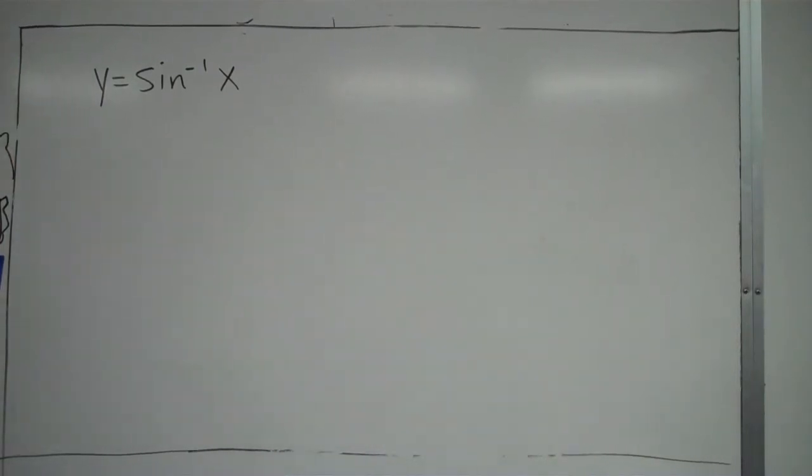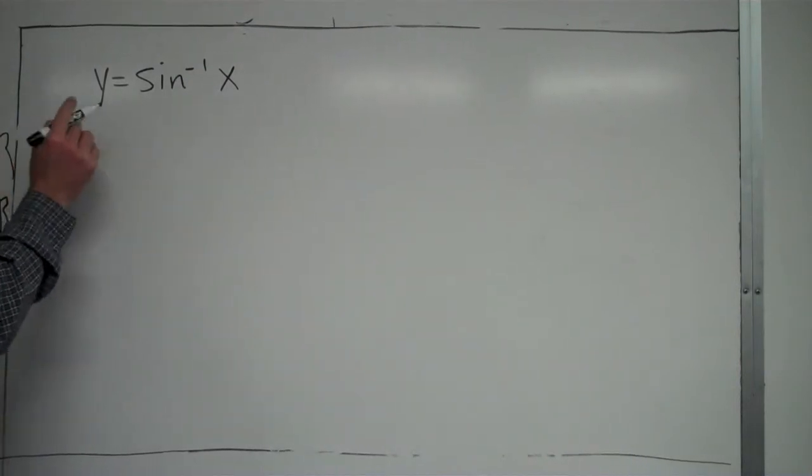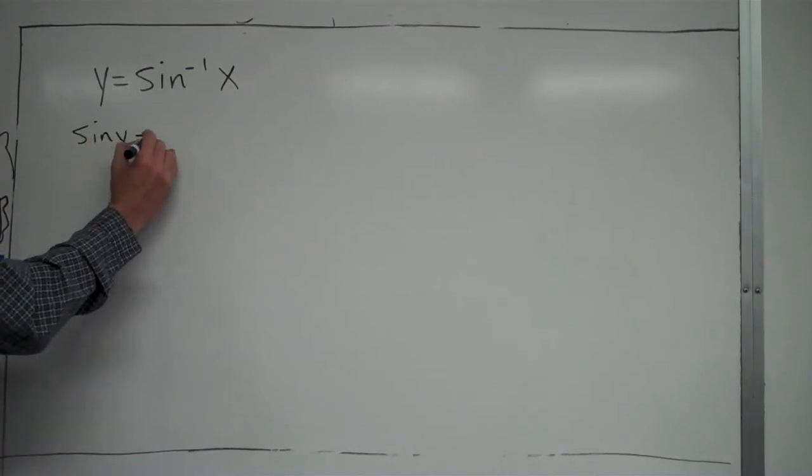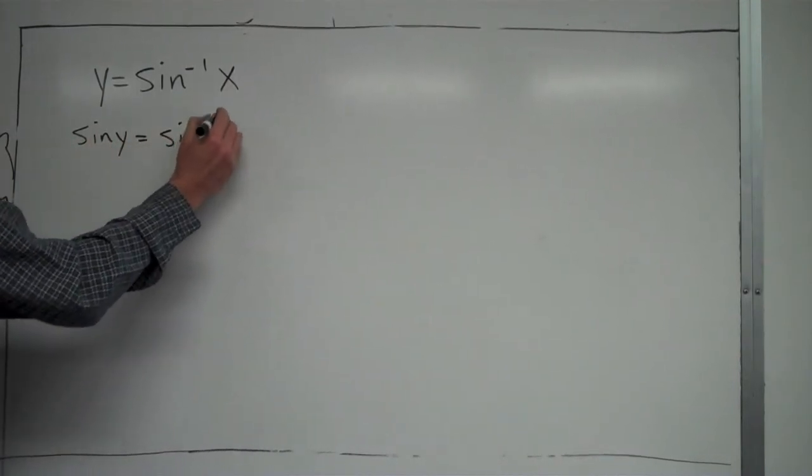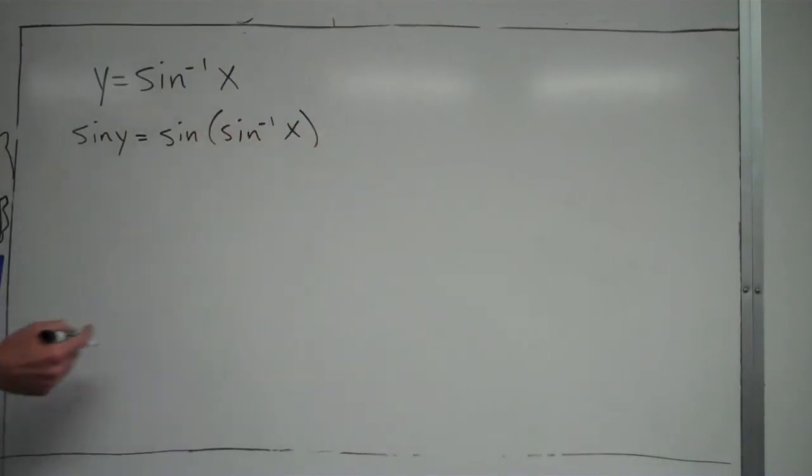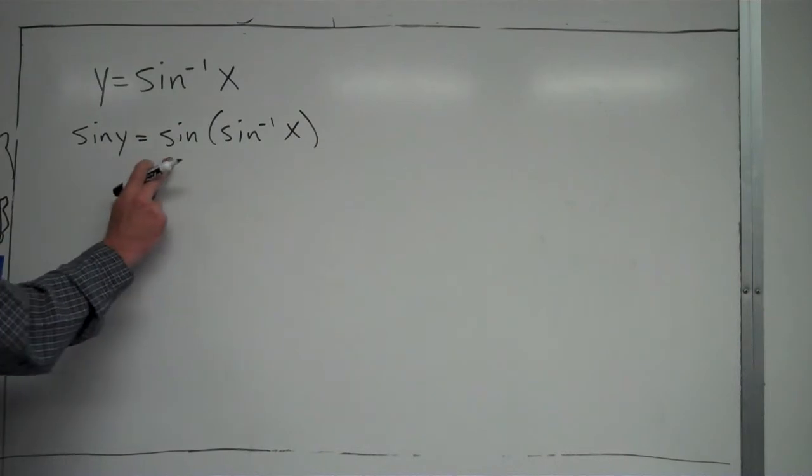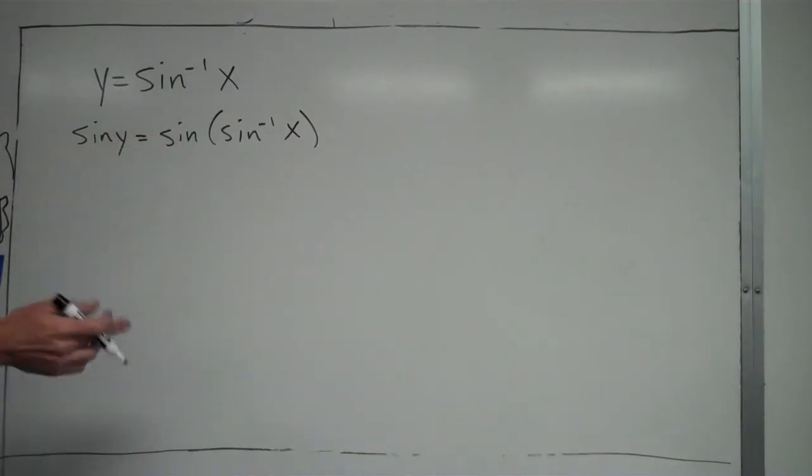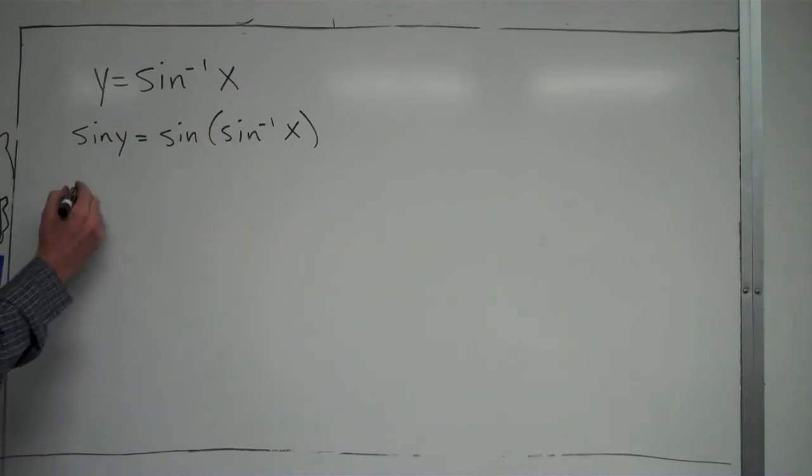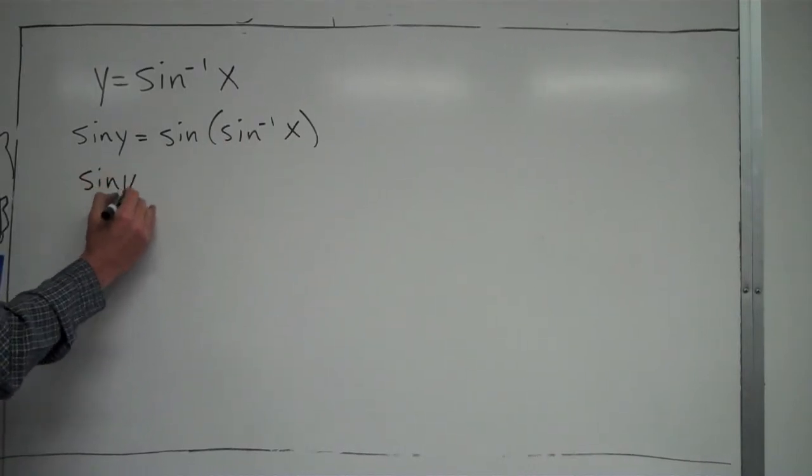I can use the idea of inverse functions, as I mentioned in a prior video, to help me out with this. So I'm going to take the sine of both sides. So it'll be sine of y equals sine of inverse sine of x. Since sine and inverse sine are inverse functions of each other, they cancel each other out, and this just leaves me with x on this side. So I get sine of y equals x.